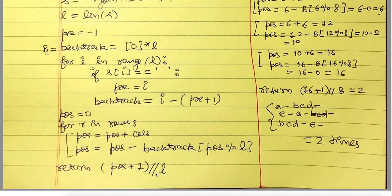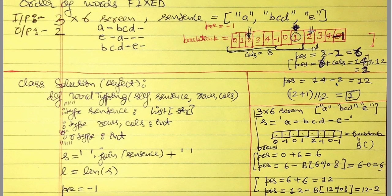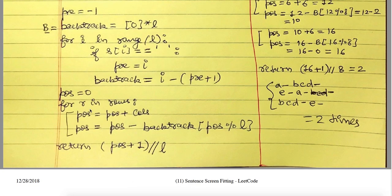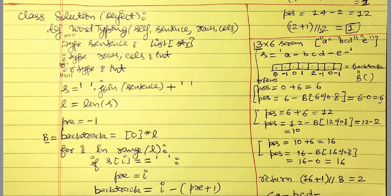After iterating all rows, `pos` represents the total number of characters — letters and inter-word spaces — we were able to write. We return `pos // L` (integer division by the string length). Here pos = 12 and L = 12, so 12 // 12 = 1, meaning we wrote the sentence once. The pos value counts all written characters and spaces, and dividing by L gives the sentence repetition count.